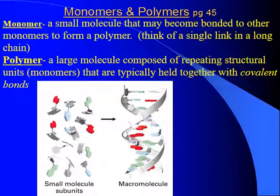Let's start off by talking about monomers and polymers. A monomer — if you know the term 'mono' from Latin — means one. So a monomer is a small, one-unit molecule that can become bonded to other monomers to form a polymer. If you know Latin, 'poly' means many. So a polymer is simply a large molecule composed of many repeating structural units called monomers, and they're typically held together with covalent bonds.